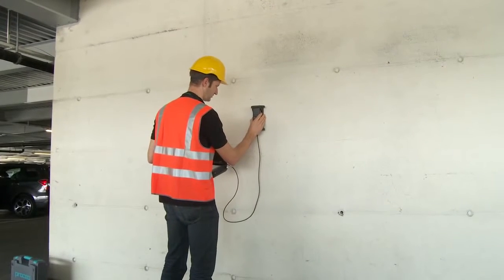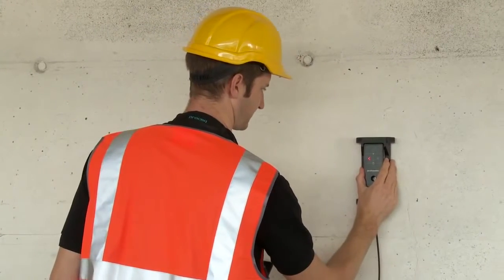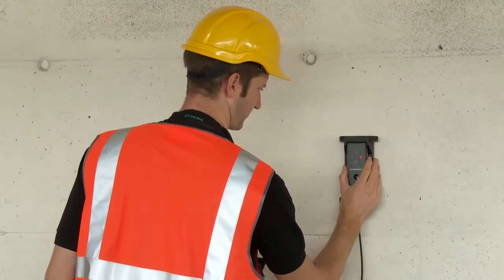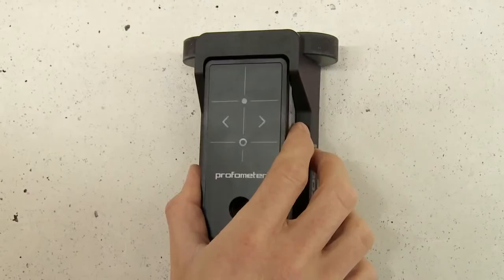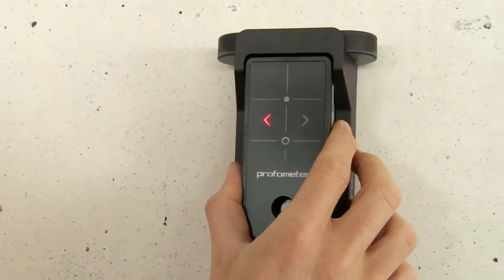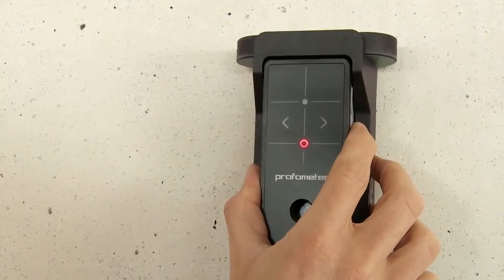Measuring with the ProFormator PM600 could not be easier. Locate the rebar by holding the probe card with the center line parallel to the assumed direction of the rebar to be detected and begin the scan. The red LED of the probe center is lit when the center line is precisely over the rebar.